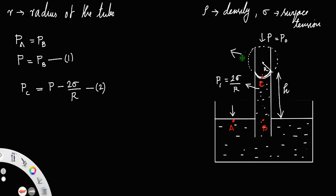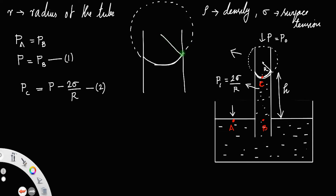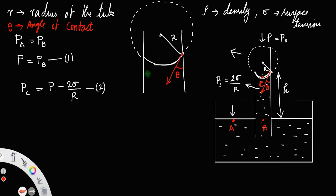Let us zoom in on this sphere. There is a concave meniscus and the radius of the sphere is capital R. The angle of contact is theta. Since it is a concave meniscus, the angle will be an acute angle. The wall of the tube forms a tangent to the sphere, and a tangent is always perpendicular to the radius, so this angle will be 90 degrees.